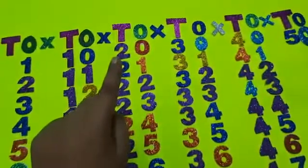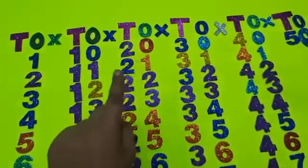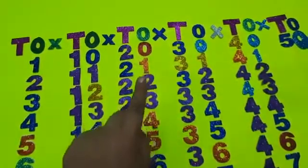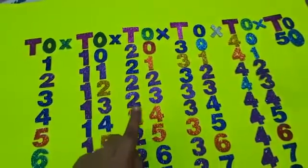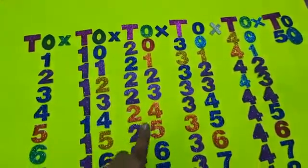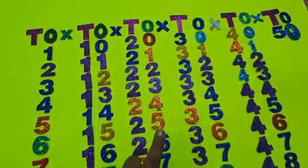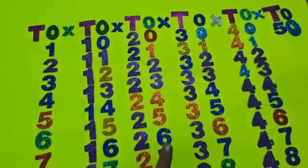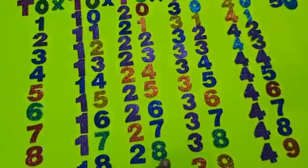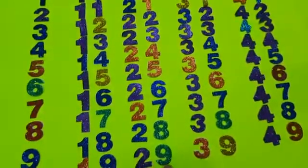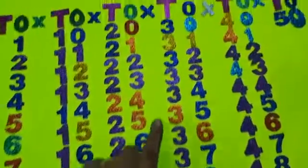Then again we move on to the next T-O: 2, 0 — 20. 2, 1 — 21. 2, 2 — 22. 2, 3 — 23. 2, 4 — 24. 2, 5 — 25. 2, 6 — 26. 2, 7 — 27. 2, 8 — 28. 2, 9 — 29.